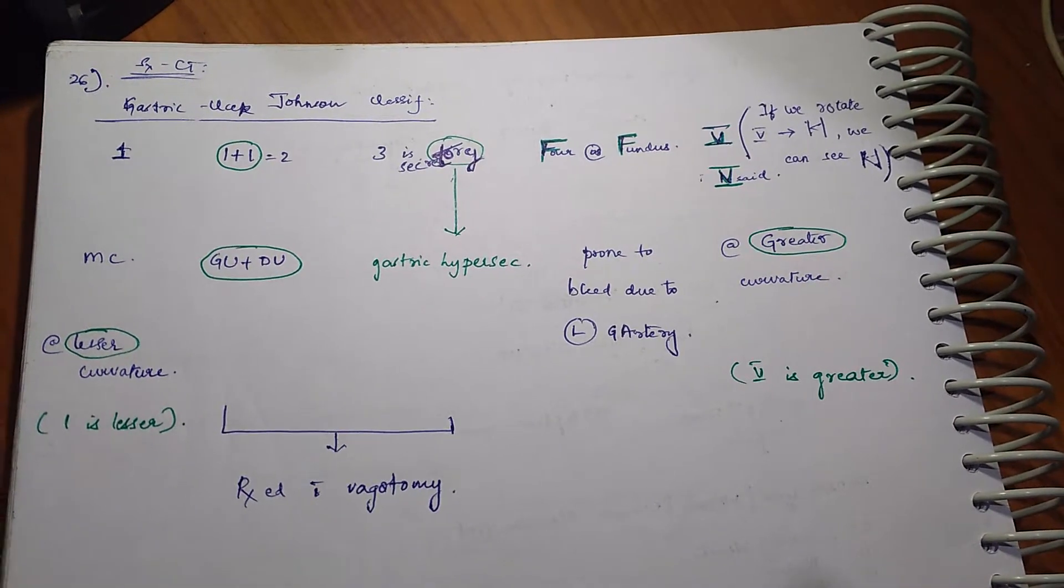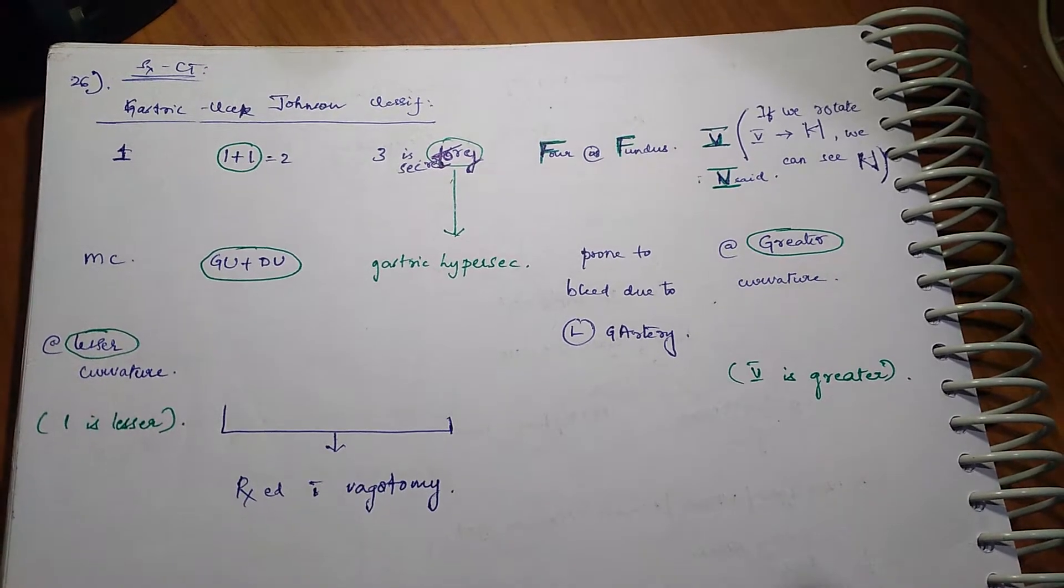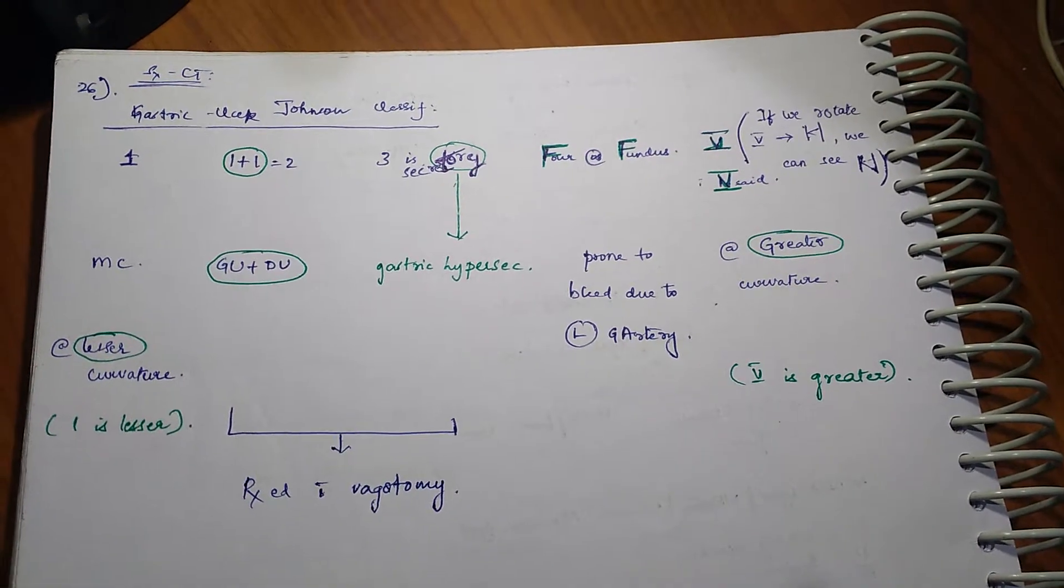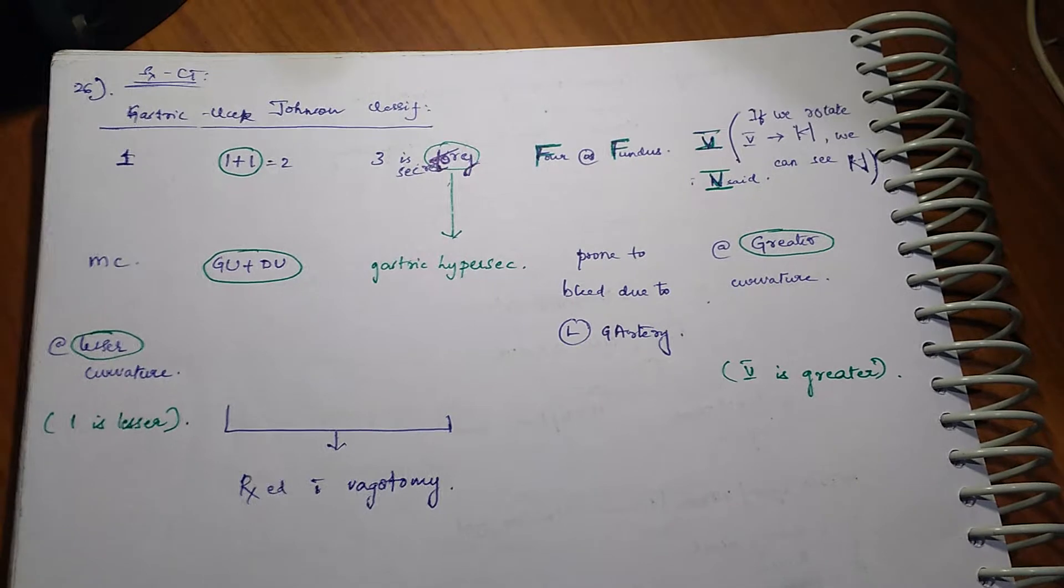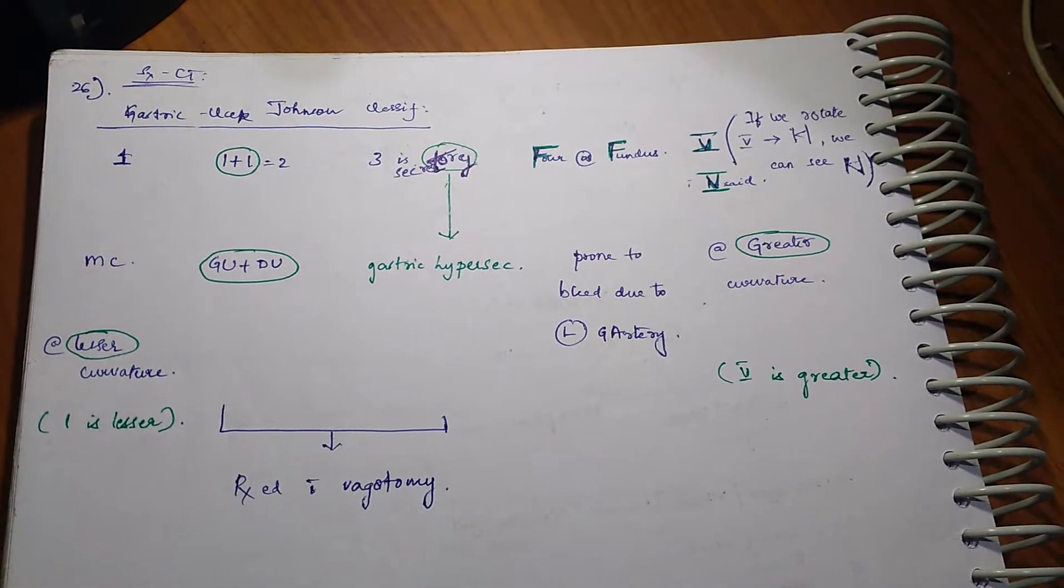Type 2 is 1 plus 1 equal to 2, so that is gastric ulcer plus duodenal ulcer. Type 3 rhymes with secretory, so it is gastric hypersecretory related ulcer.